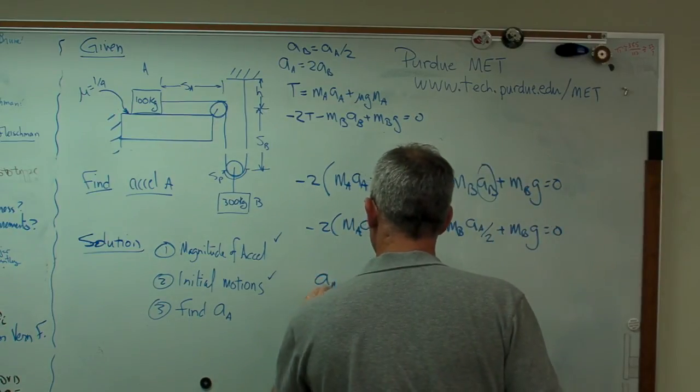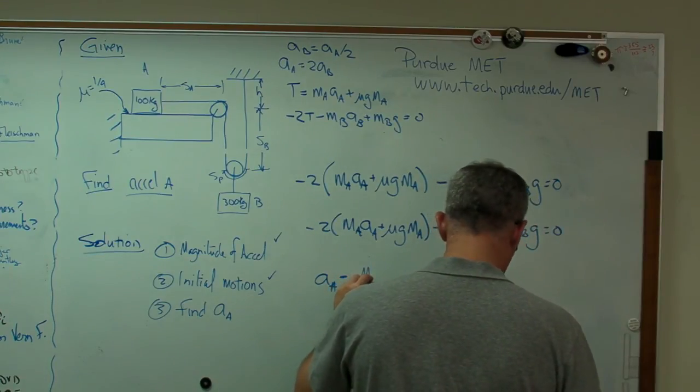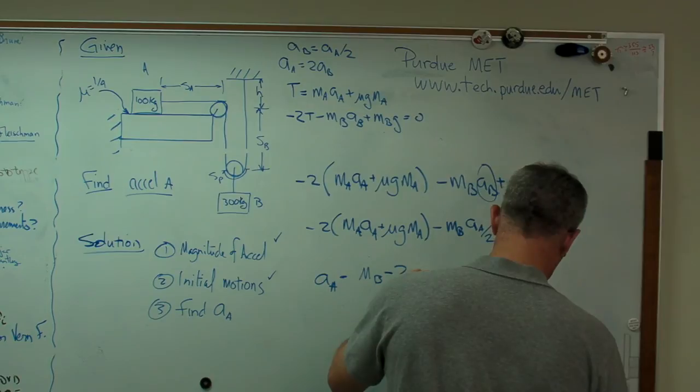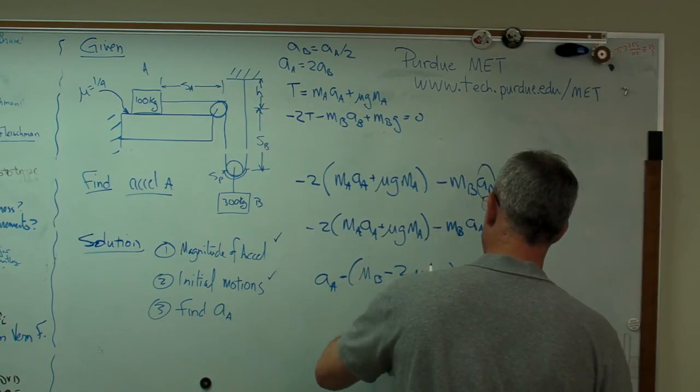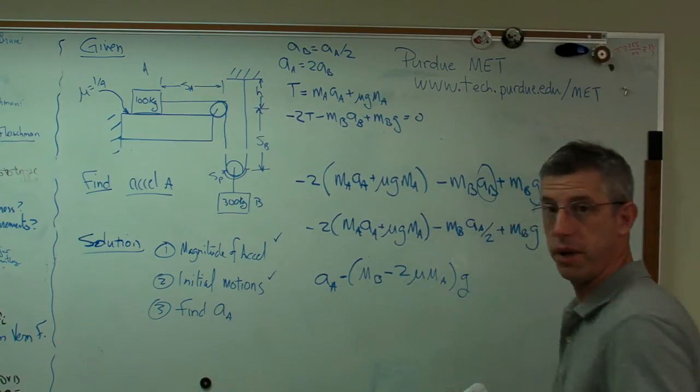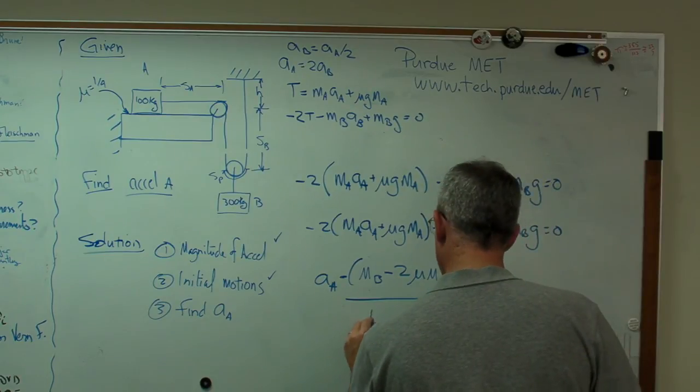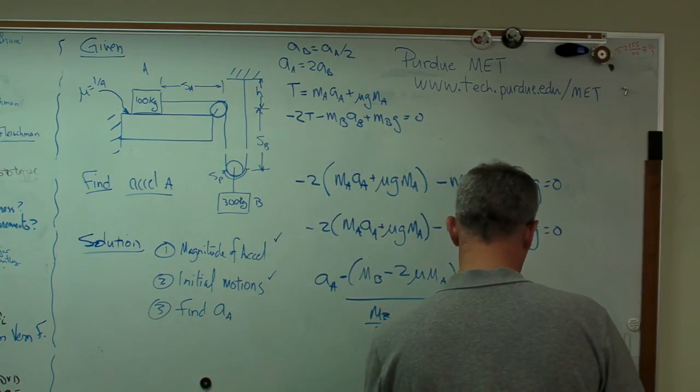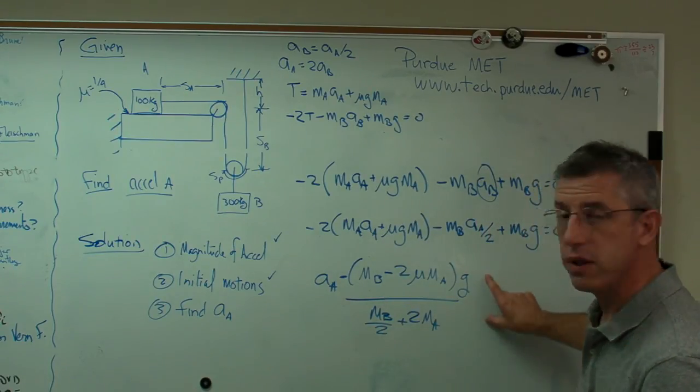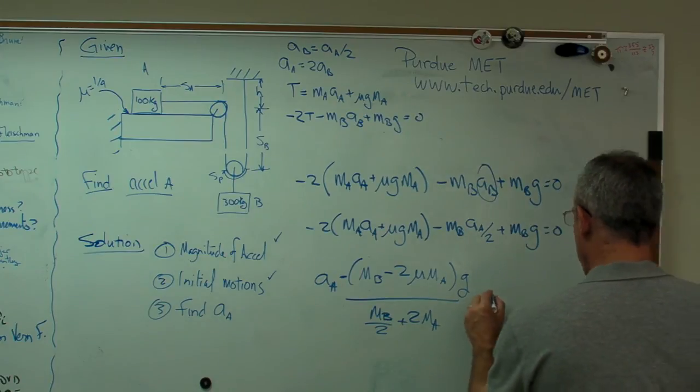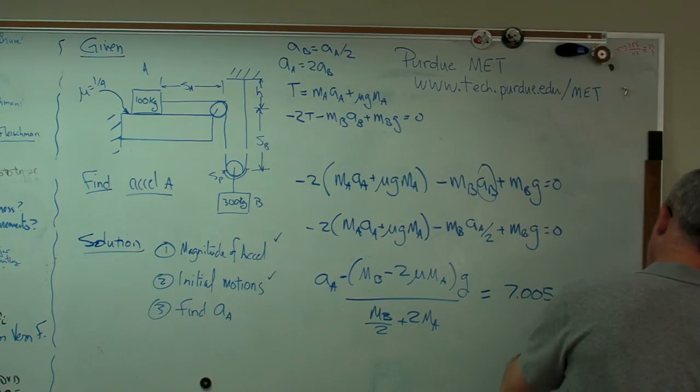If you write all that out, I'm running out of time here. This is just some algebra you've got to do here. There's the numerator. And the denominator of this expression is MB over 2 plus 2MA. Assuming I didn't mess up here, that's the expression.